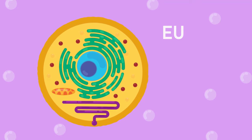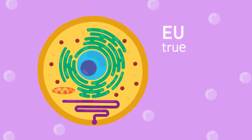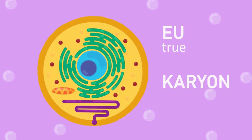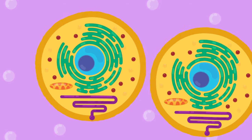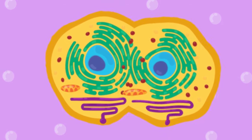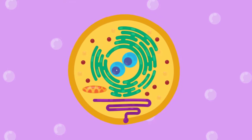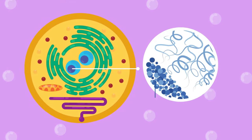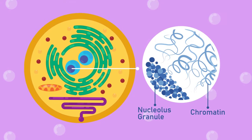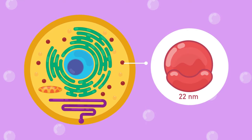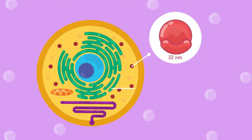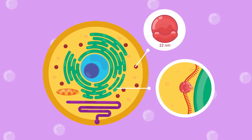The 'eu' in eukaryote means true, and 'karyon', like we mentioned before, means nucleus. So as the name suggests, eukaryotes have a nucleus, or more than one nuclei in their cells, and their genetic material resides inside it. Their ribosomes are slightly larger, about 22 nanometers in diameter, which in most cases is attached to the endoplasmic reticulum.